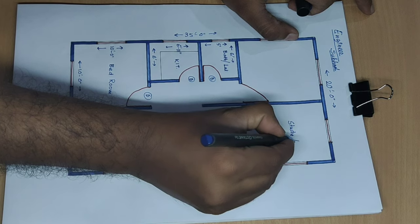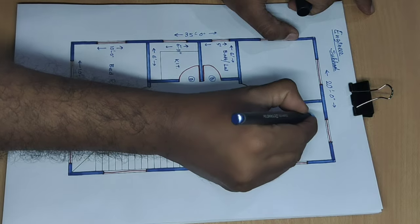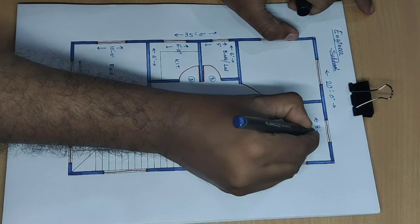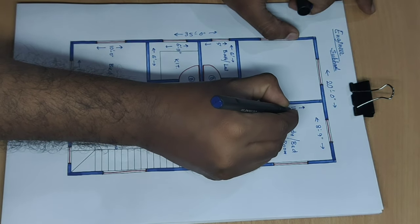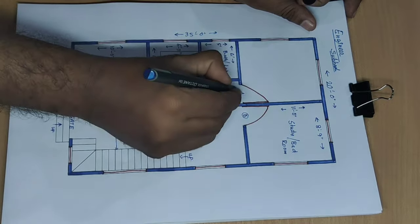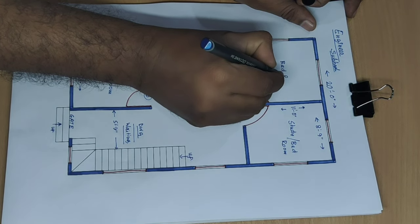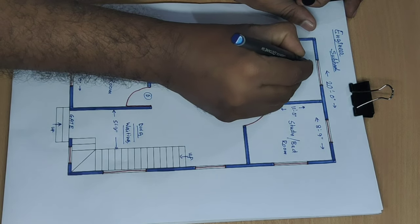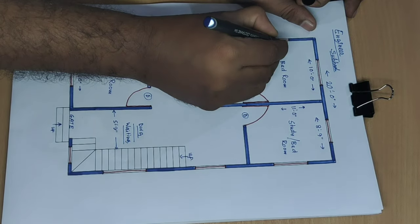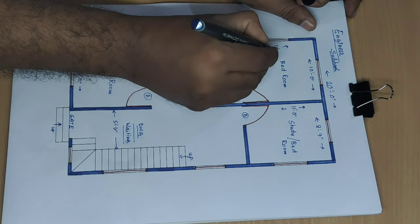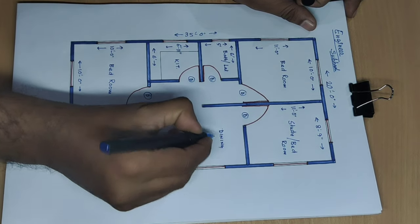Bedroom, 8 feet 9 inch and other side 11 feet. Next bedroom size 10 feet and other side 11 feet. And dining area.